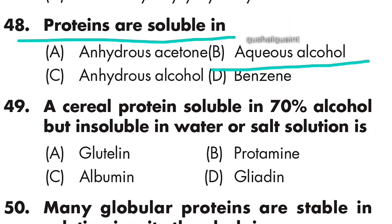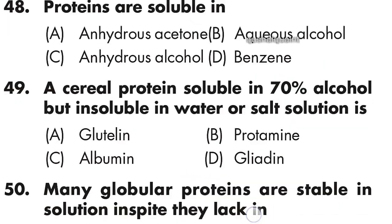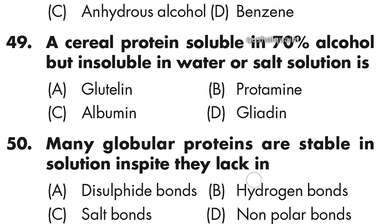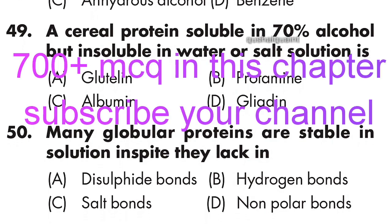Question 49: A cereal protein soluble in 70% alcohol but insoluble in water or salt solution is — option D is right — gliadin. Question 50 is the last question of this video series. There are 700+ MCQs on protein and its metabolism, so please subscribe to our channel for more videos.